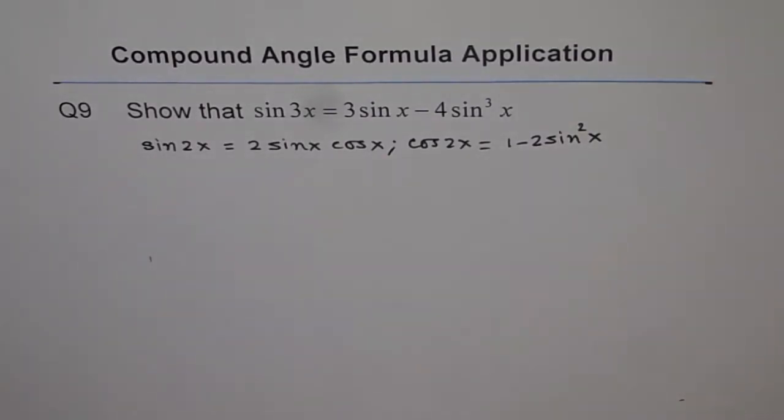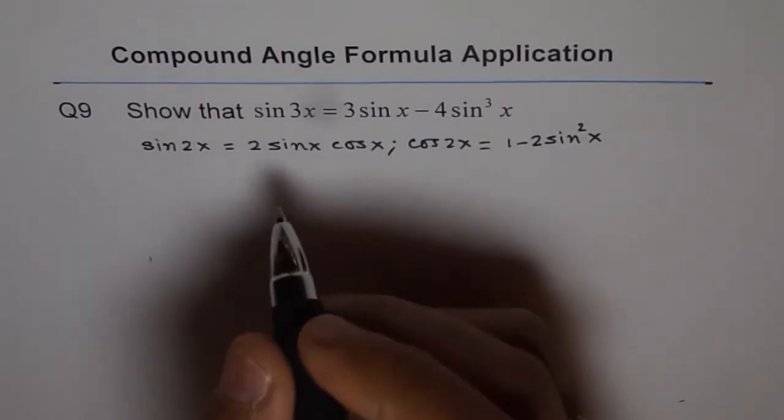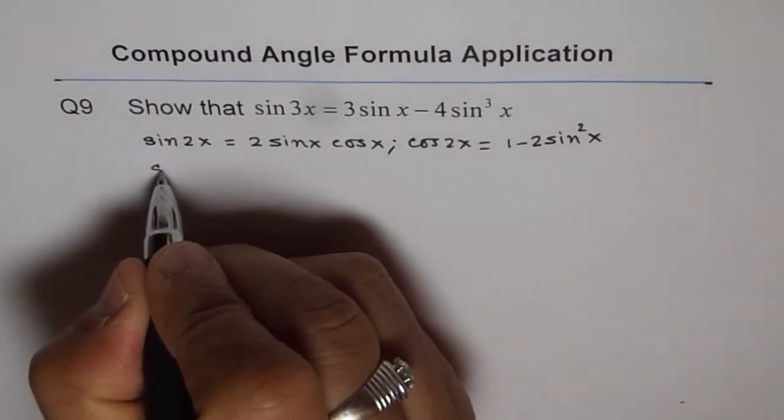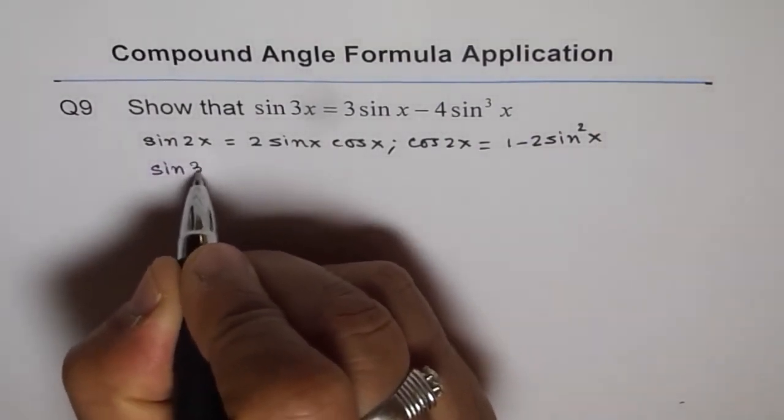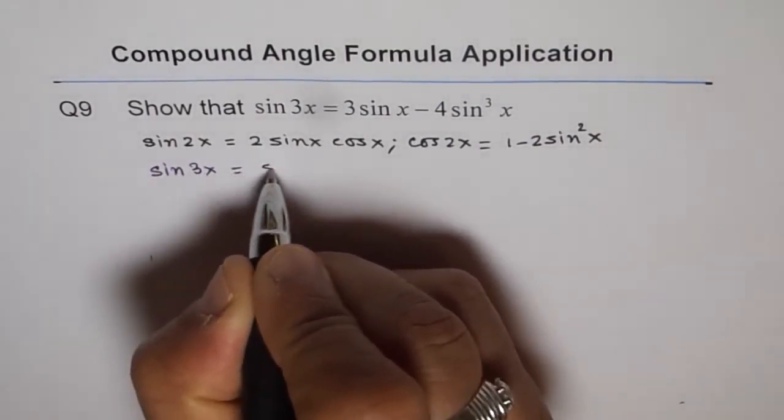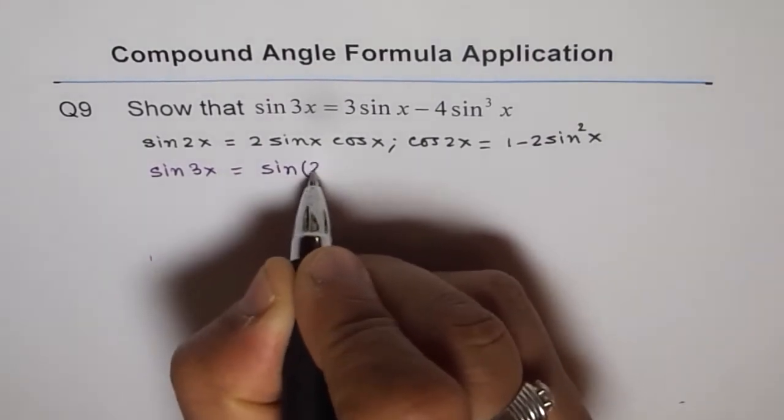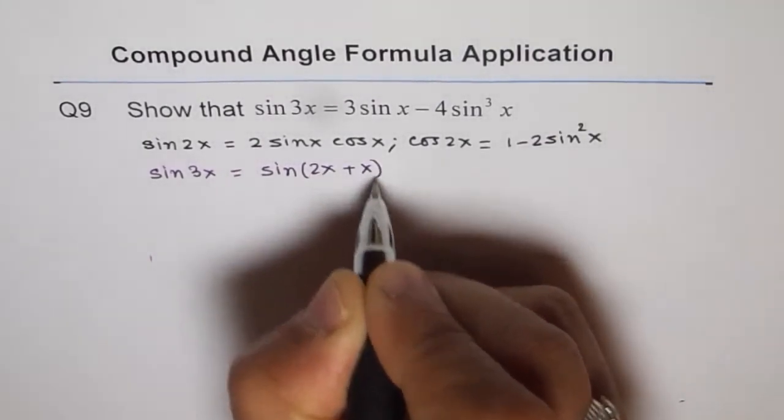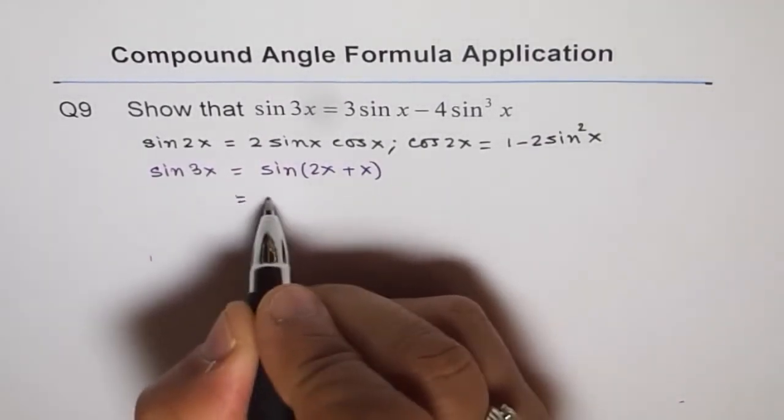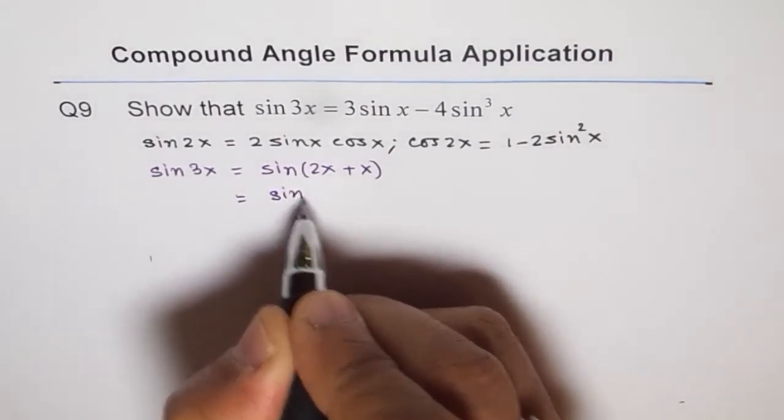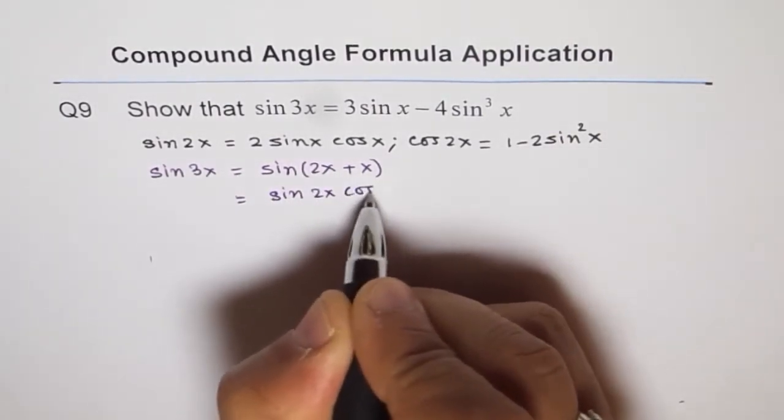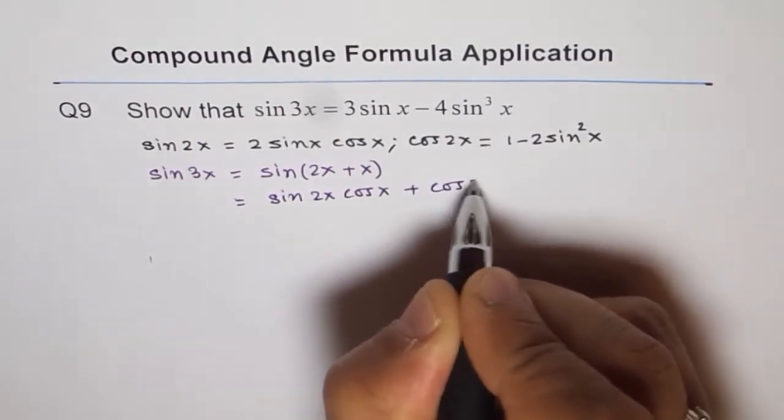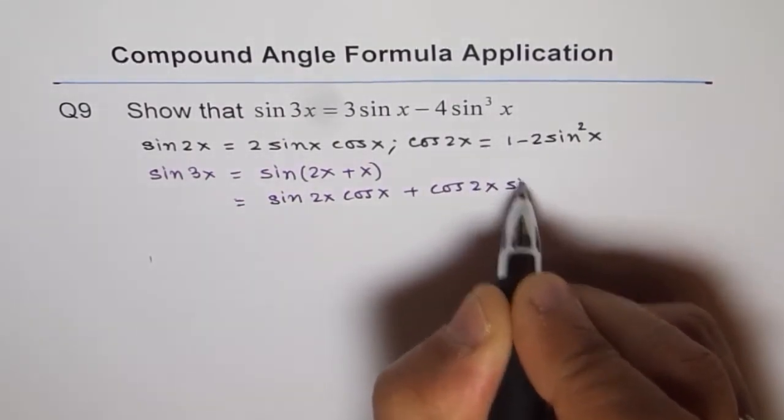Let me change the pen. That's the formula which we are going to use to prove this identity, okay? Now, so let's write. So what is sine of 3x equal to? Sine 3x can be written as sine of 2x plus x. Now, which is sine 2x cos x plus cos 2x sin x.